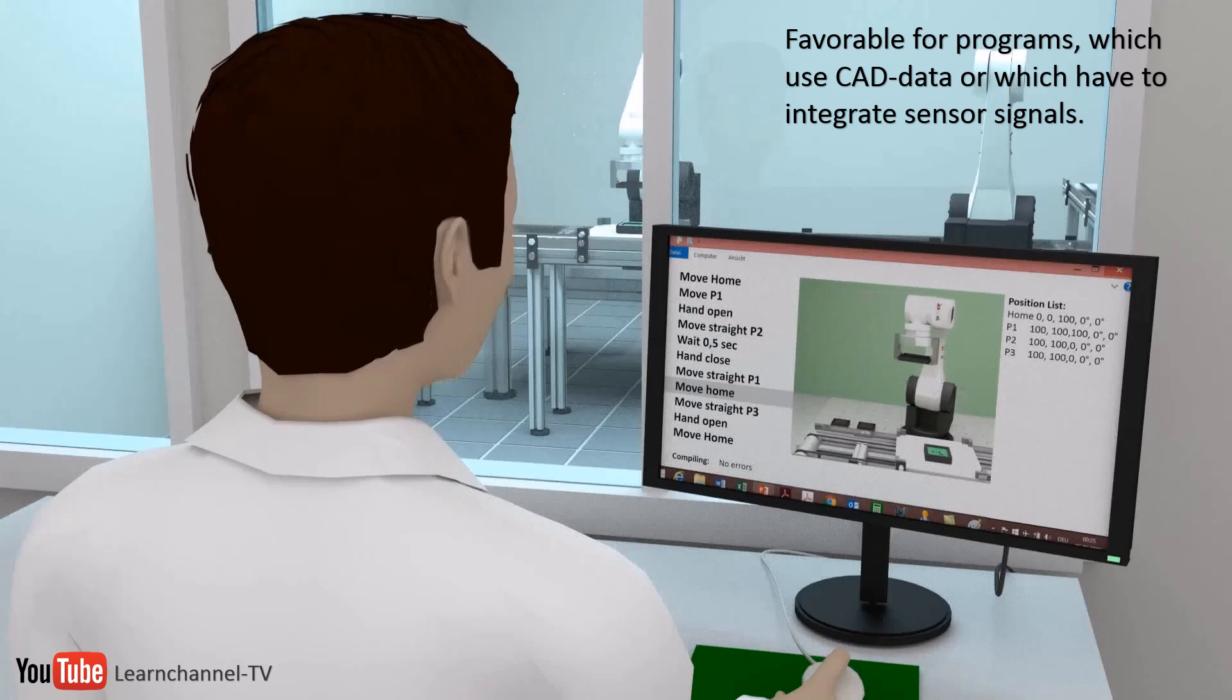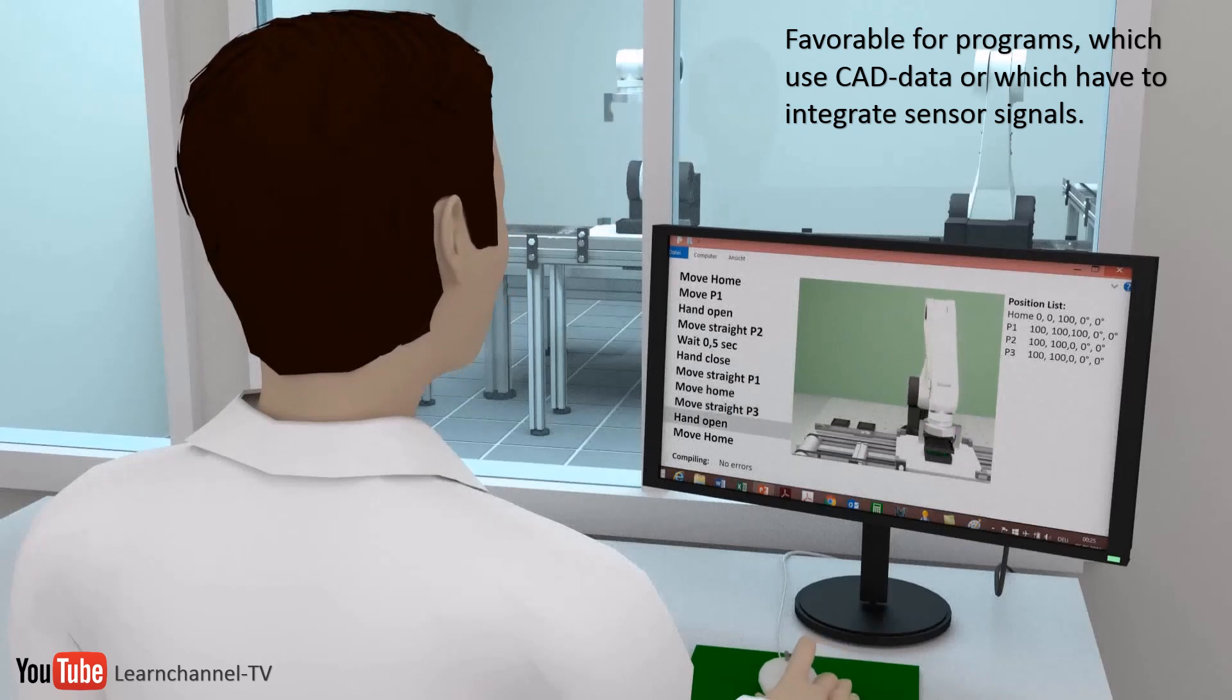Even possible collisions can be recognized already in the phase of simulation. All programming commands are available. Once the program is written and simulated, you just load it to the robot control.